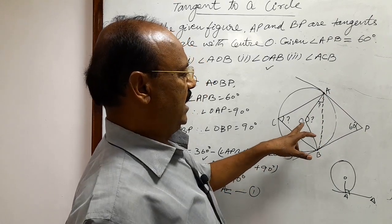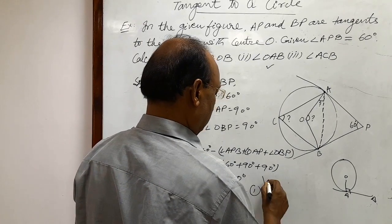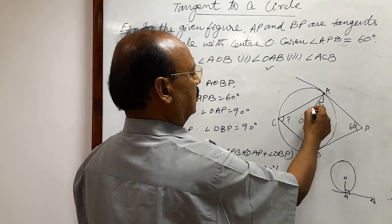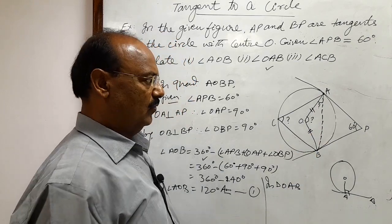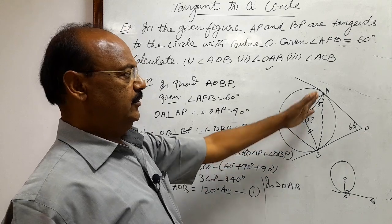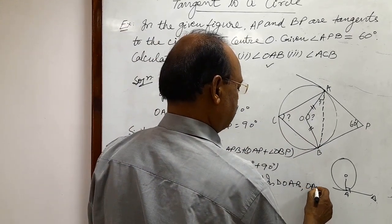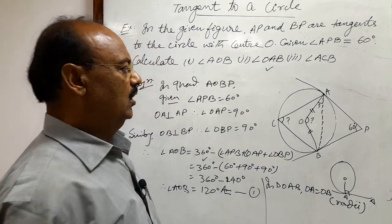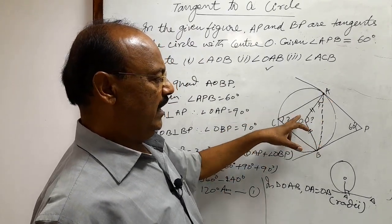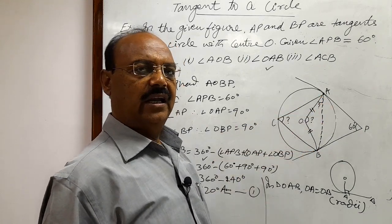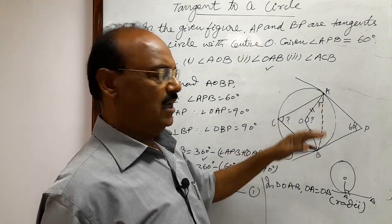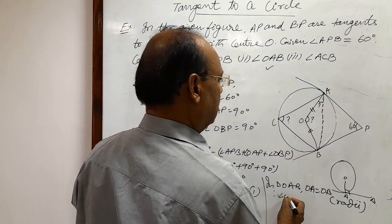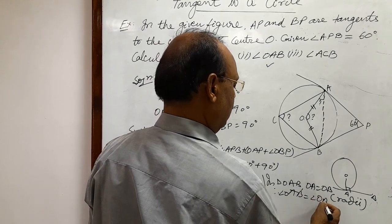Here we will consider triangle OAB. In triangle OAB, OA is equal to OB because they are radii of the same circle. Therefore, since two sides are equal, the angles opposite to those equal sides are also equal, so angle OAB equals angle OBA.